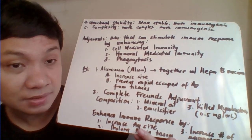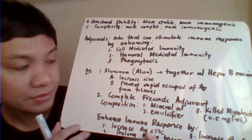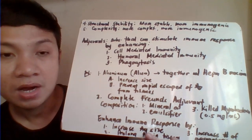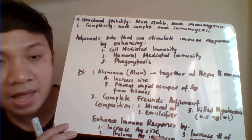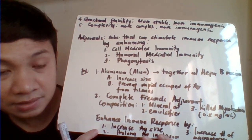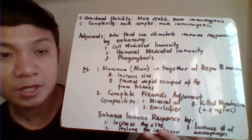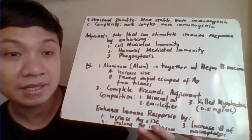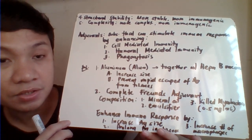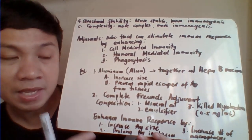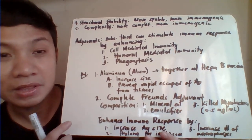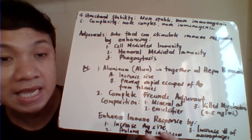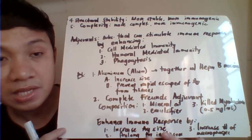Another example of an adjuvant is complete Freund's adjuvant, made up of mineral oil, an emulsifier, and mycobacteria at a concentration of 0.5 mg/mL. It works similarly: increasing antigen size, prolonging antigen retention at the tissue site, and enhancing phagocyte activity to stimulate the immune response. All of these activities help stimulate cell-mediated immunity, help B lymphocytes, and enhance phagocyte activity, ultimately resulting in antibody production.